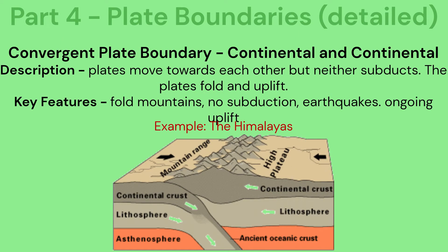Convergent plate boundary — continental and continental: two plates move towards each other but neither subducts. The plates fold and uplift. Key features include fold mountains, no subduction, earthquakes and ongoing uplift.